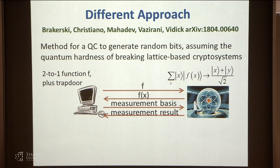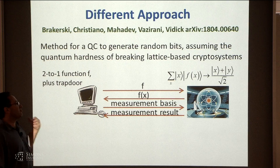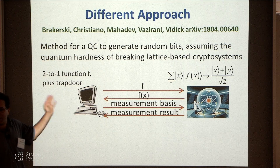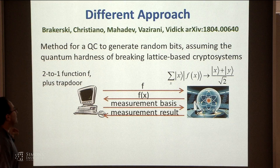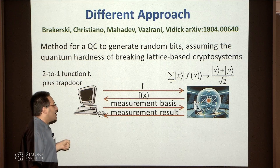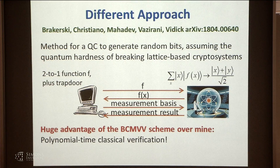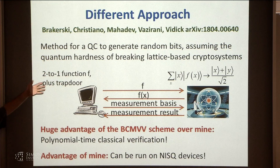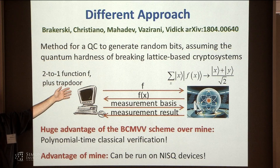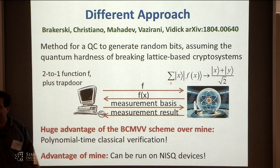There is a very different approach to getting certified randomness from a quantum computer — a scheme to generate certified random bits assuming the quantum hardness of breaking lattice-based cryptography. It's a beautiful scheme, and a huge advantage over my scheme is that it gives a polynomial-time classical algorithm to verify the results. The advantage of my approach is that you can do it with a near-term device, whereas their scheme seems to require on the order of a thousand qubits and probably some error correction to implement.